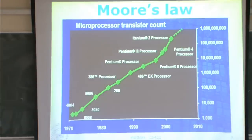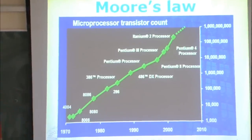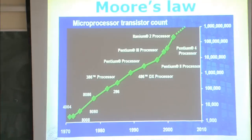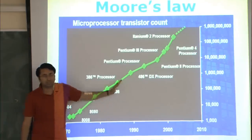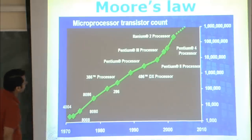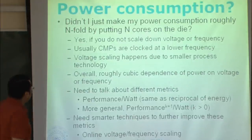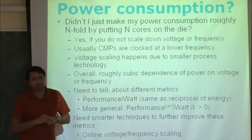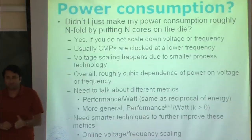Here is a chart showing transistor counts for Intel processors — the y-axis is in log scale, the x-axis is in linear scale, and the line is more or less linear, which substantiates Moore's Law. Now, if you put n cores on a chip, didn't you just make your power consumption roughly n-fold? The answer is yes, if you do not scale down voltage or frequency. Usually, chip multiprocessors are clocked at a lower frequency — as the number of cores increases, the processor is normally clocked at a slower frequency.